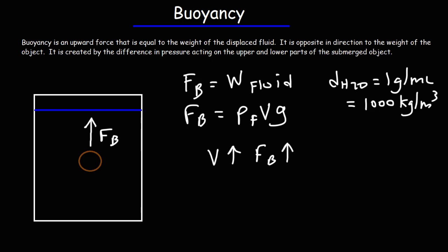The buoyant force is opposite in direction to the weight of the object. Gravity wants to bring the object down, but the upward buoyant force wants to lift it up.